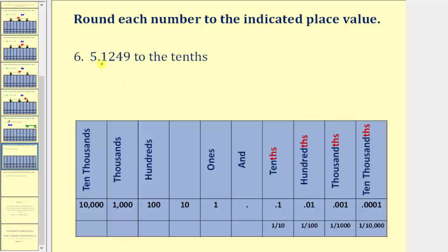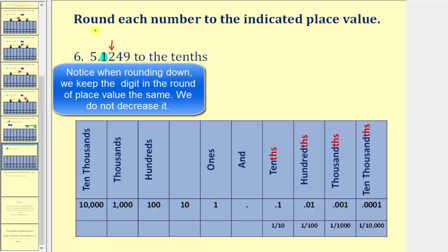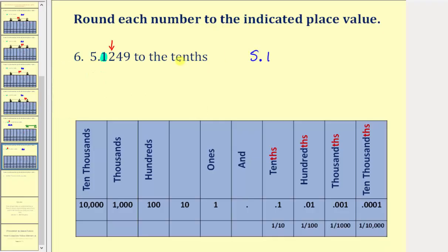Next we're asked to round 5.1249 to the tenths place value. Notice how the one is in the tenths place value. The digit to the right is a two, and because it's four or less, we round down. Which means 5.1249 rounds to 5.1 when rounding to the tenths place value. Notice that whenever we round to a given place value, the rounded value should only contain digits up to that place value.